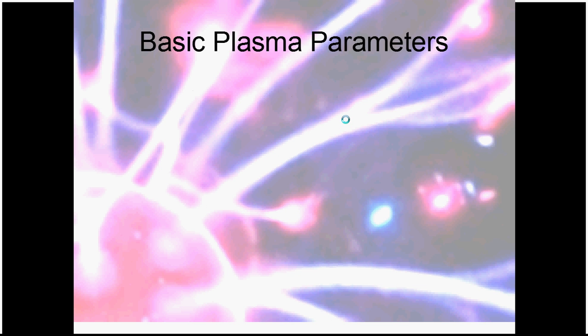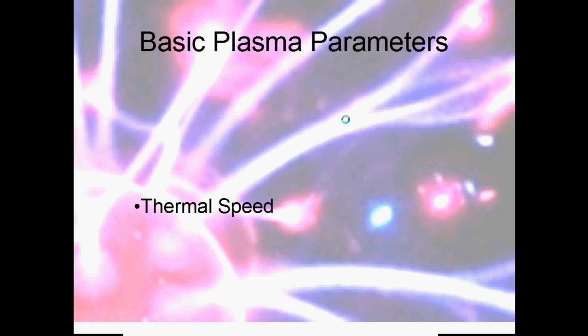We'll move on then to some more basic plasma parameters. We want to talk about the thermal speed. The thermal speed means for a particular temperature of plasma, the average speed of a particle of a particular species within that plasma is the thermal speed. The hotter the temperature of the species, the faster the particles on average are going.